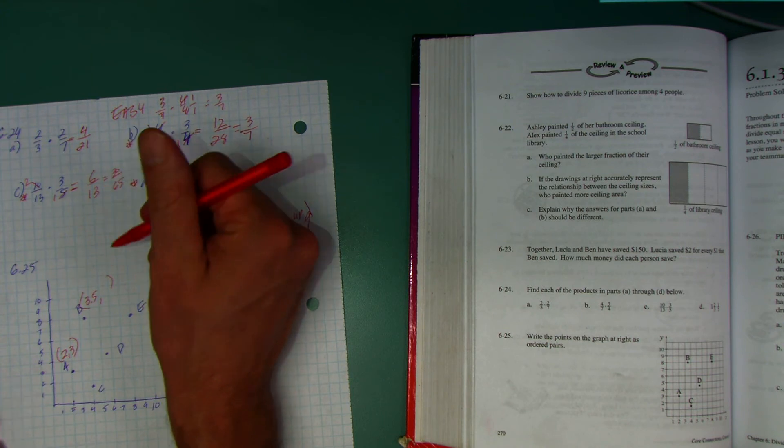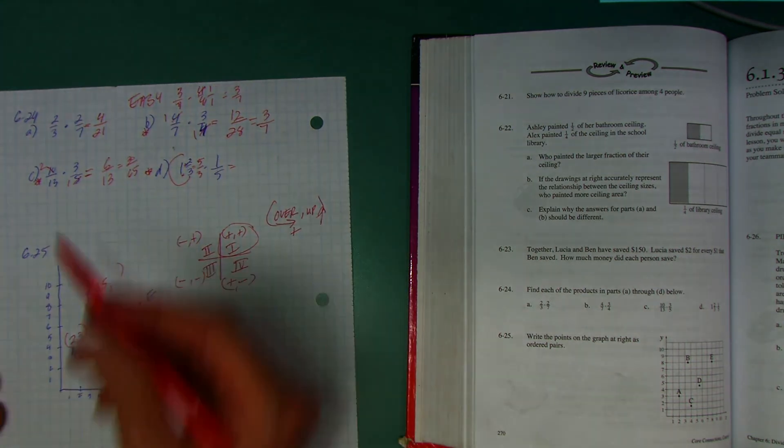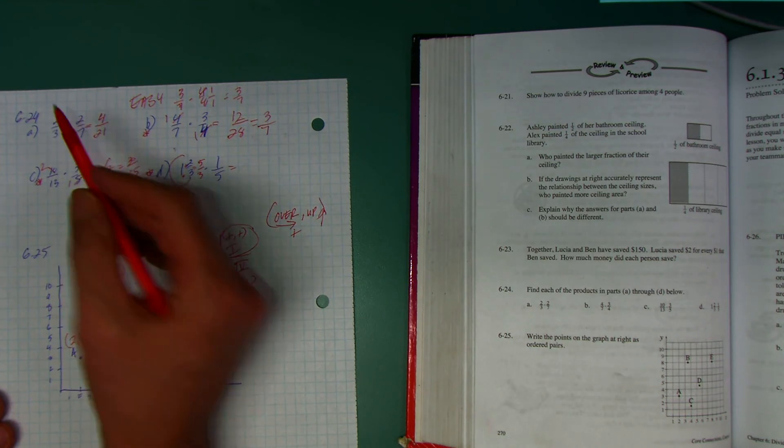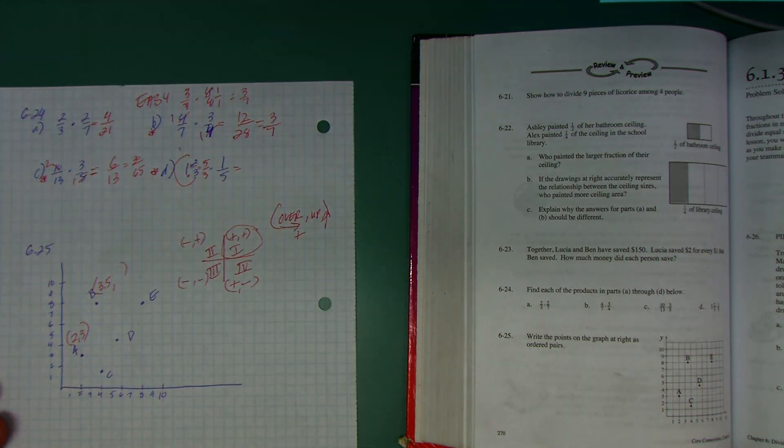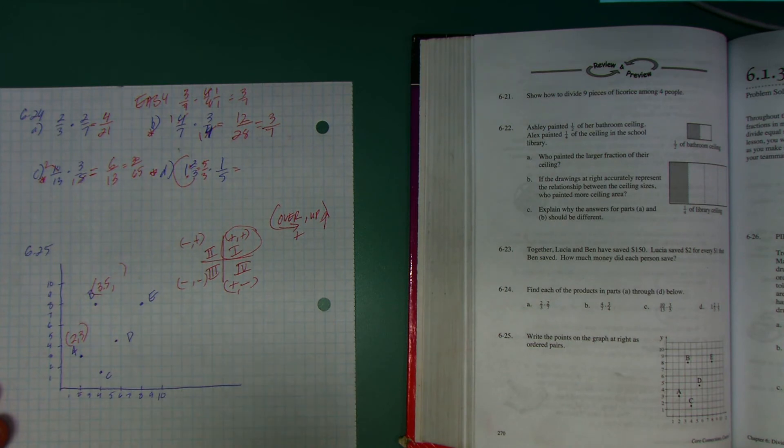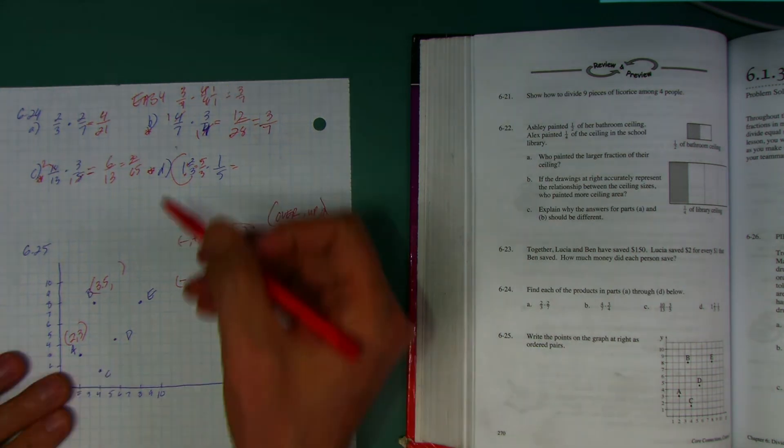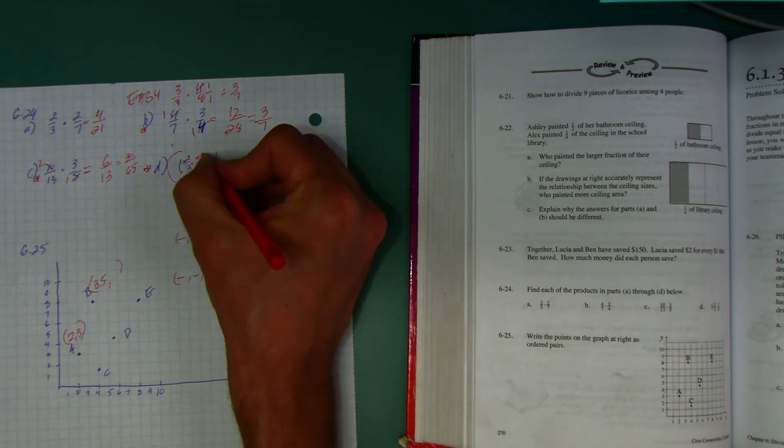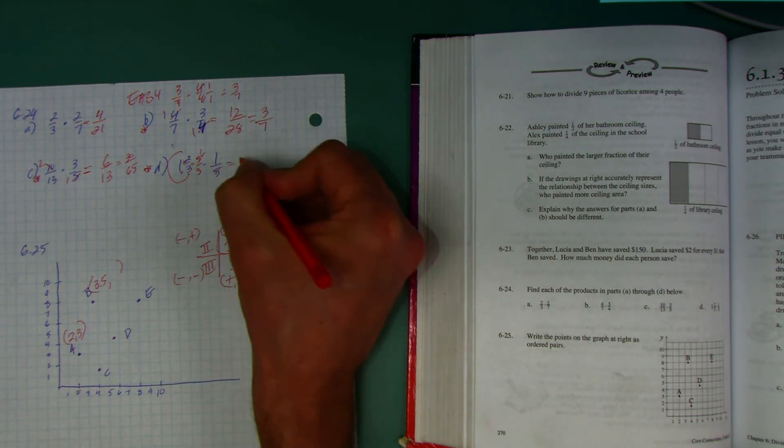Now, how come I didn't cancel here? I have a 2 here and a 2 there. It has to be on top and bottom. If they're both on the top or both on the bottom, you can't simplify it. So 5 over 3 and 1 over 5 - looks like 5 goes into the top and 5 goes into the bottom, once and once. 1 times 1 on top, 3 times 1 on the bottom: one-third.